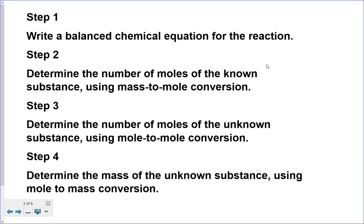Here are the four steps. First, write a balanced chemical equation — sometimes they give this to you and step one is done. Second, determine the number of moles of the known substance. Sometimes they give you moles directly. If not, if they give you grams, then you have to change the grams to moles.